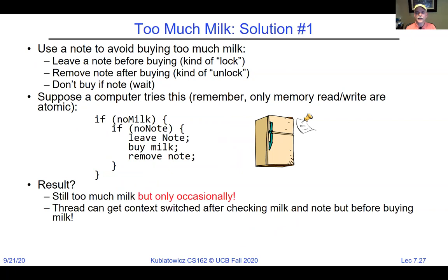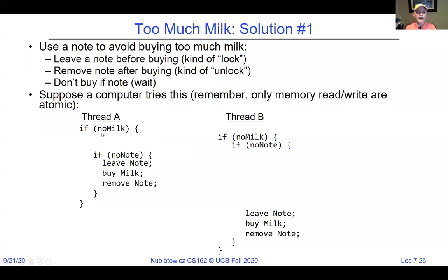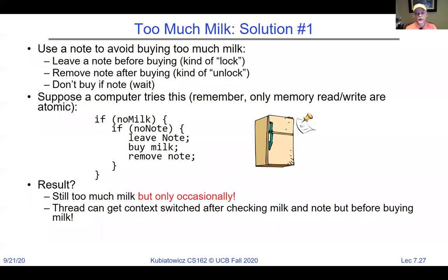Synchronization problems that happen less frequently are far worse than ones that happen frequently, because the frequent ones you might have a chance of finding. Solution 1.5: leave the note first, then check. But now nobody ever buys milk because you leave a note, check if there's no note — but there is a note — and then remove the note. That's worse. Solution 2 uses two notes: thread A leaves note A, thread B leaves note B; A checks if there's no note B to decide whether to buy, and B checks if there's no note A.